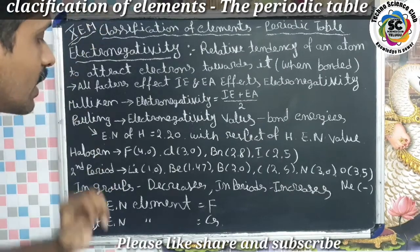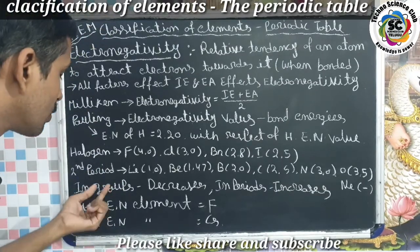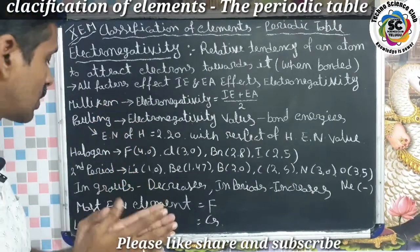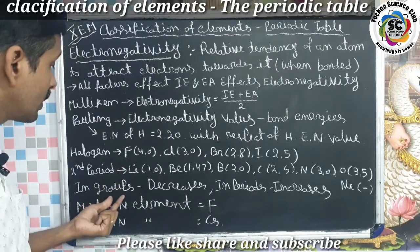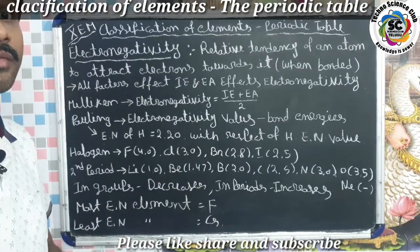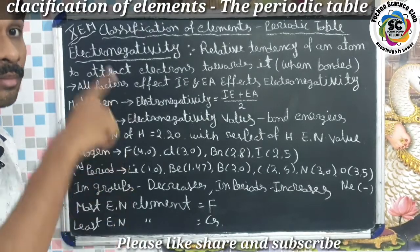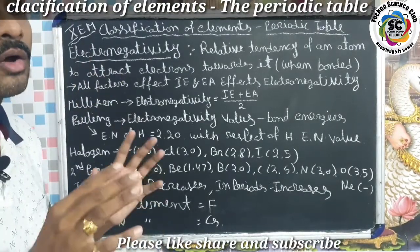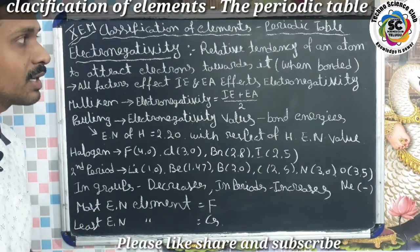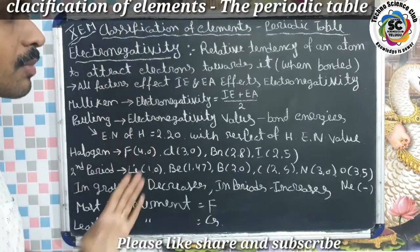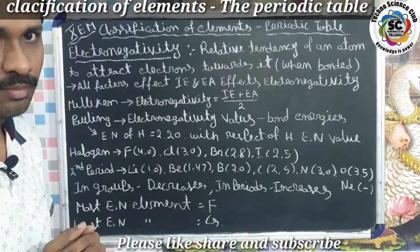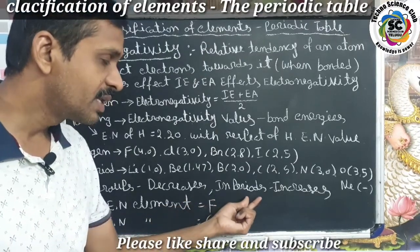Now let's observe how electronegativity behaves in groups and in periods. Electronegativity decreases from top to bottom in groups. As you go from top to bottom in a group, the electronegativity value decreases because the bonding nature decreases going downward.